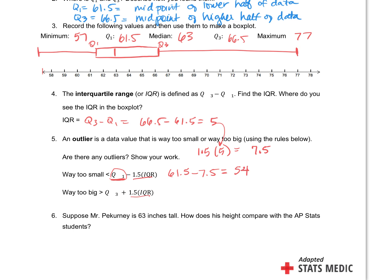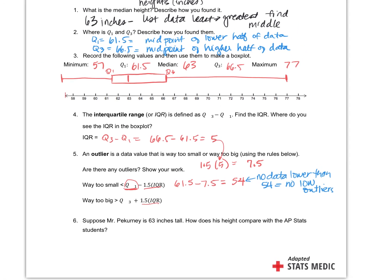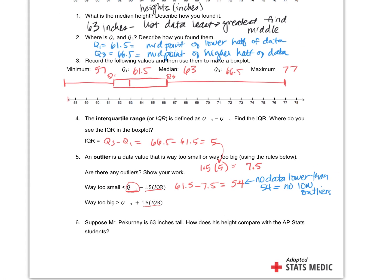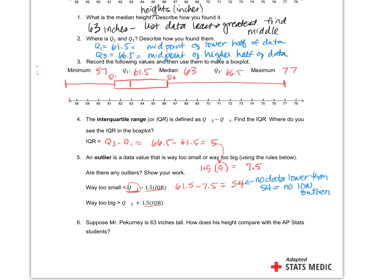Now to determine if there is an outlier, I take a low outlier. I take Q1. Q1 was what, 61 and a half, minus seven and a half gives me what? 54. So then I look at my data set. Do I have any data points that are lower than 54? No. So there's no data lower than 54. So that means there's no low outliers. So what this is doing is creating an invisible fence. It's like creating a little fence out here where if I extended my graph, it would be 54. And if any data points fell outside that, it would be an outlier.